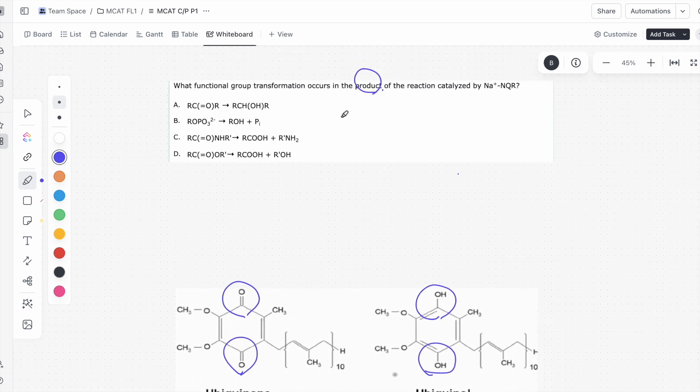So we're going to be looking for an answer where we see a ketone become an alcohol, and the only answer where we see that is actually A. So we have the ketone group right here, and it eventually turns into an alcohol. That is the functional group transformation that is occurring.